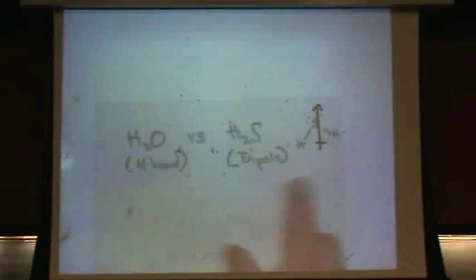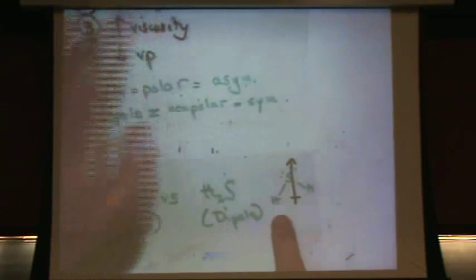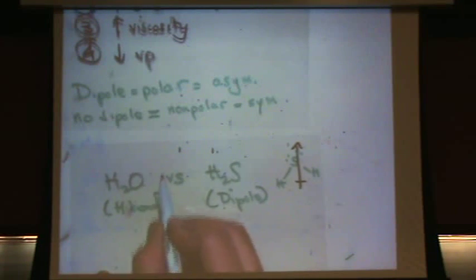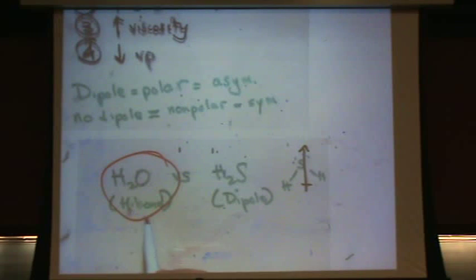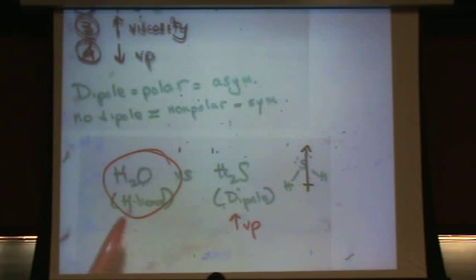You get back to the other problem. Notice H2S is asymmetric. H2S is asymmetric. Thus, it has a dipole. That's how I determine that. Now, which one has the higher force? I'll circle it. Yeah, this one's got to have the higher force. H bonding, much stronger than the dipole. Which one has the higher vapor pressure? H2S. Remember, the stronger force has the lower vapor pressure. See how this works? Maybe we should try a couple more here.